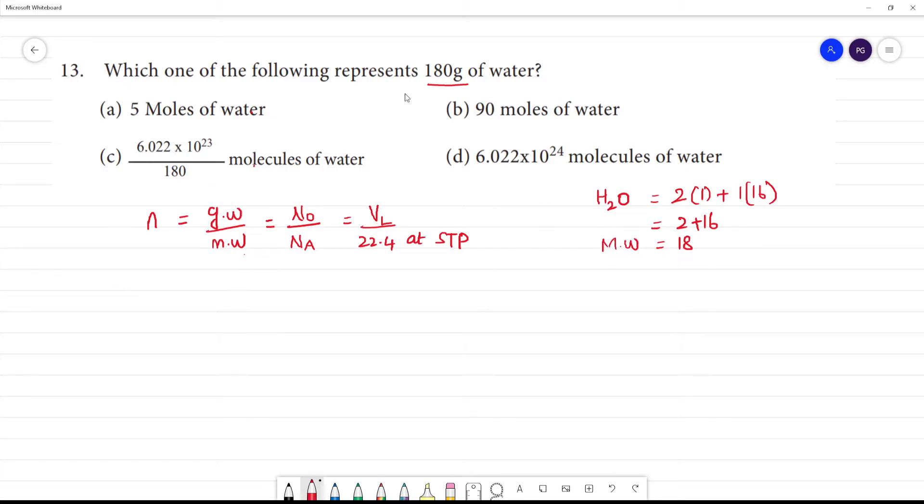Now we calculate moles. N equals given weight, which is 180, divided by molecular weight, which is 18. Canceling, we get n equals 10 moles.